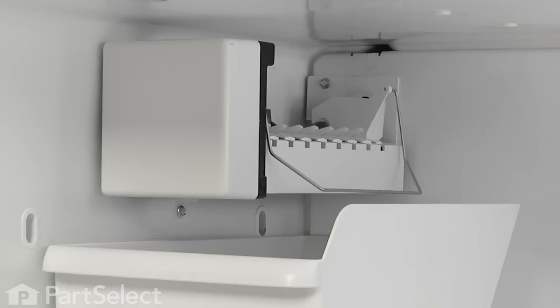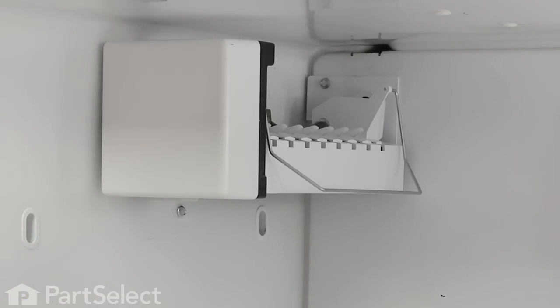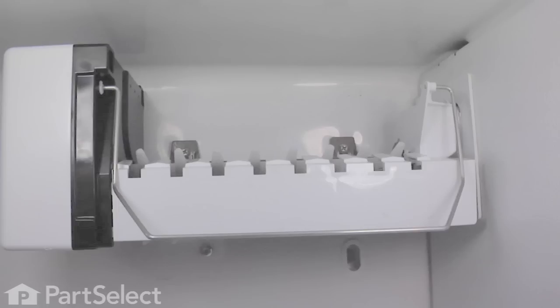The ice maker is located in the upper left hand corner. We'll move the ice bucket out of the way. There's one quarter inch hex head screw on the bottom side of the ice maker that needs to be removed, and there are two that are located above the ice maker on the left wall that just need to be loosened.